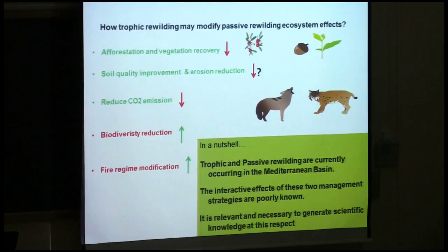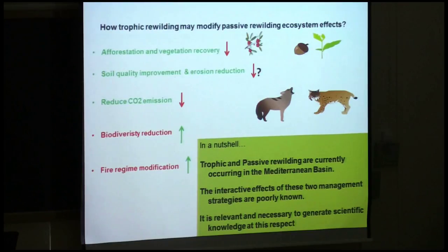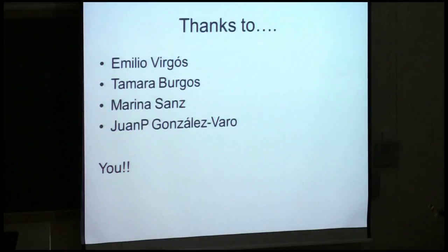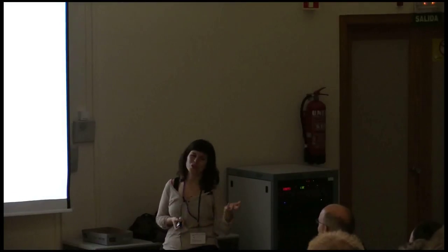Trophic and passive rewilding are currently occurring in the Mediterranean Basin, and the interactive effects of these two management strategies are poorly known. However, we already have enough knowledge to propose hypotheses that we can test. We believe we should do so because this is currently ongoing, and as scientists we have the responsibility to provide answers from a scientific point of view. Thank you to all the co-authors, especially to Emilio for giving me the opportunity to put together the pieces of this puzzle, to Tamara and Marina for doing all the field work, and to Juanpe for being invited to this perhaps crazy symposium.